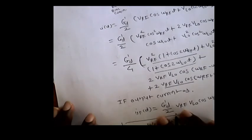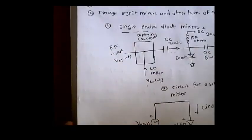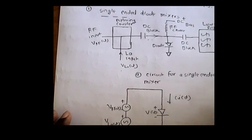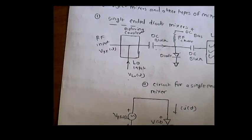So here we defined the concept of the single ended mixer, which provides only the intermediate frequency output because it is a down converter. This is the first type: the single ended mixer. It is called a single ended mixer because it consists of only a single diode. In this lecture, we saw the various types of mixers and studied the single ended diode mixer in detail. We can stop here. Thank you very much.